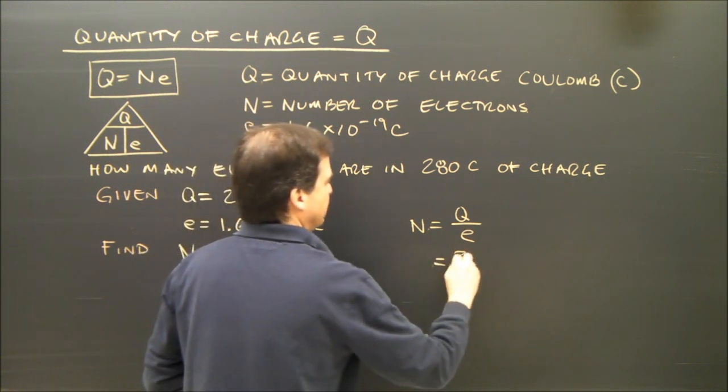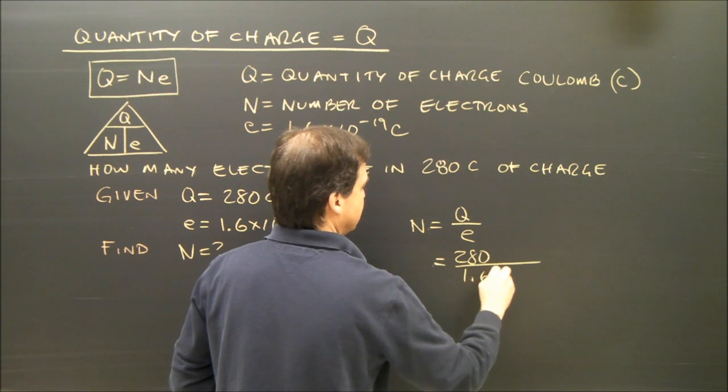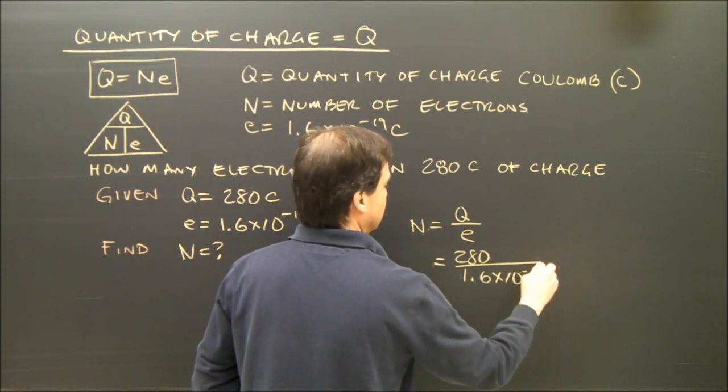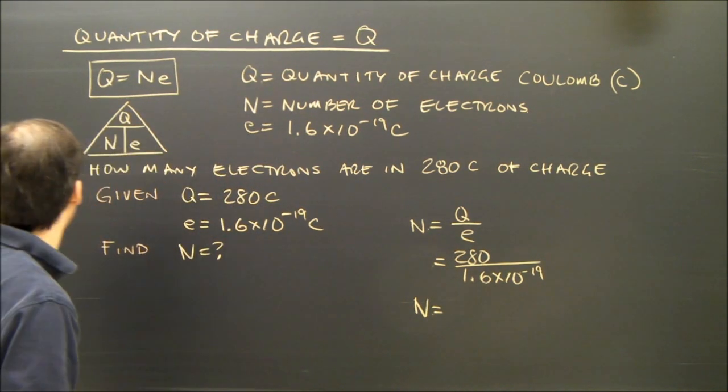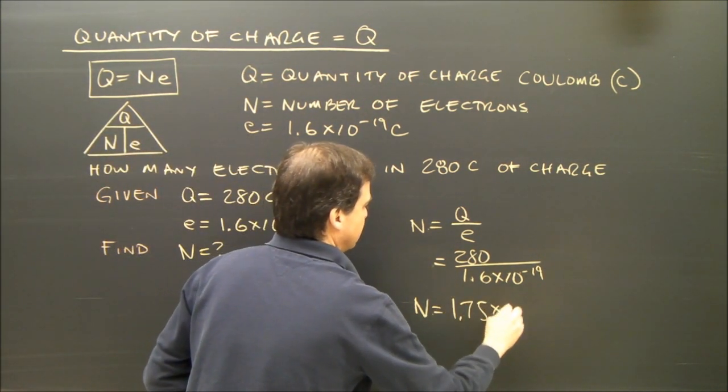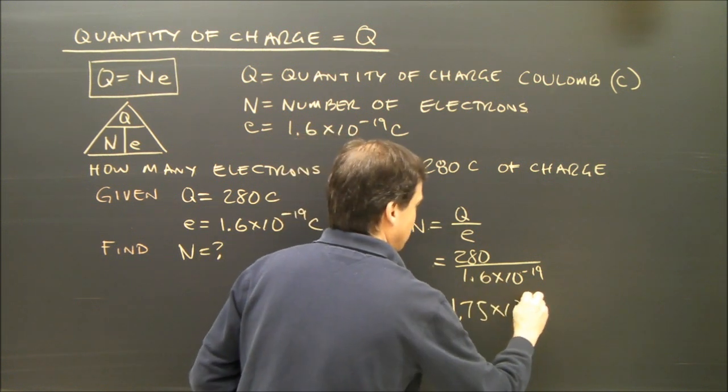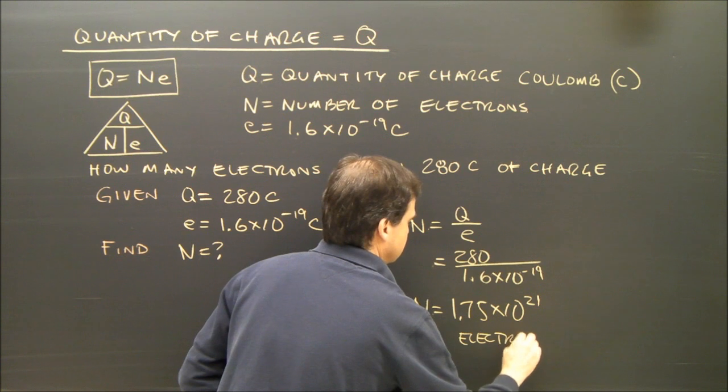So it's Q 280 divided by 1.6 times 10 to the negative 19. So N is going to equal 1.75 times 10 to the 21 electrons.